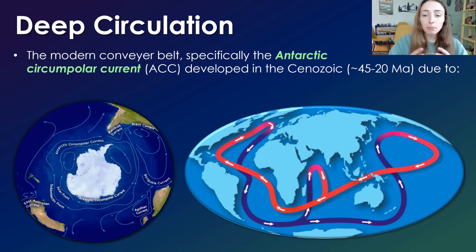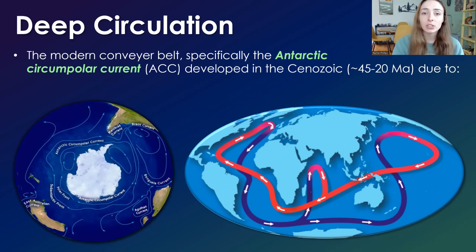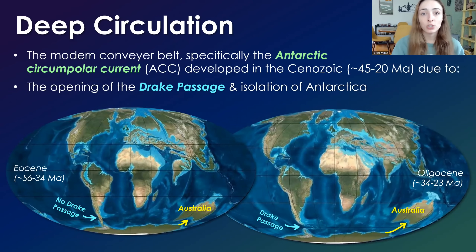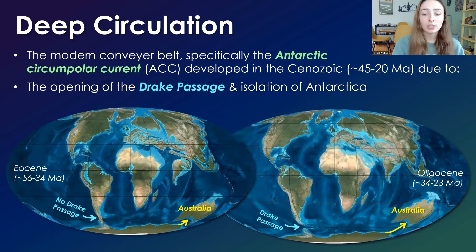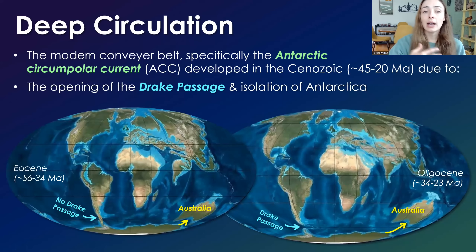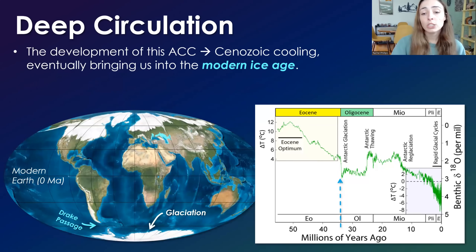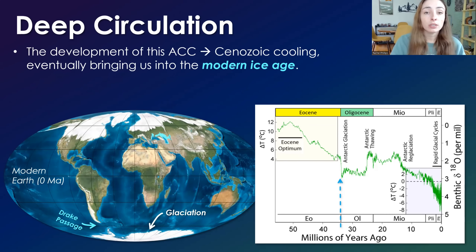The modern ocean conveyor belt pattern has developed relatively recently in the Cenozoic, specifically with the Antarctic circumpolar current — the isolated current around Antarctica. The event that allowed circulation to isolate around Antarctica was the isolation of Antarctica as a continent, which happened as the other continents moved away as Gondwana broke up. The last few to do this were India, then Australia, and then South America broke away forming the Drake Passage, which allowed circulation to go through and isolate itself around Antarctica. This was actually the first major step in beginning our current Cenozoic cooling trend that eventually led us into our current modern ice age.